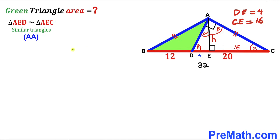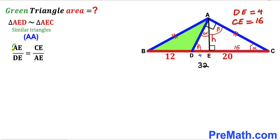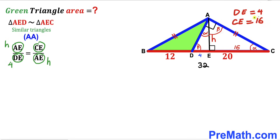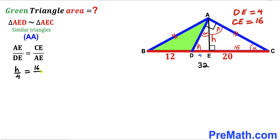Since these two triangles are similar, we have a proportion: the ratio of side lengths AE to DE is equal to the ratio of side lengths CE to AE. AE is represented by lowercase h, so I'll replace both AE terms with h. DE is 4, and CE is 16. So we can write h divided by 4 equals 16 divided by h.